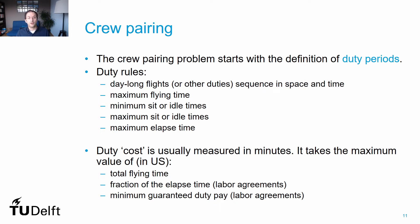The calculation of costs is usually measured in minutes. For American airlines, because of the way crew salaries are calculated, it is usually the maximum value between the total flying time, a predefined fraction of the total elapsed time, or an equivalent minimum guaranteed duty pay translated into flight hours.